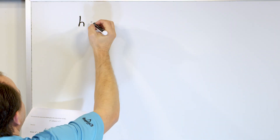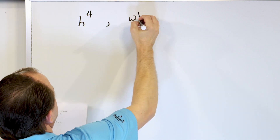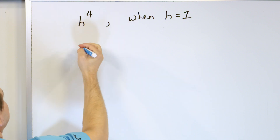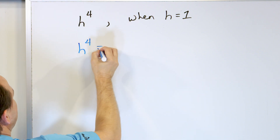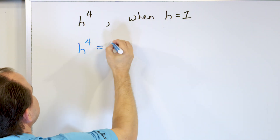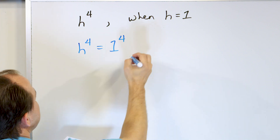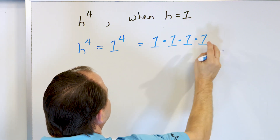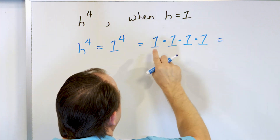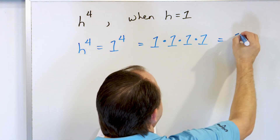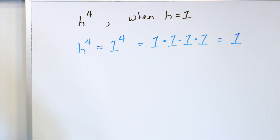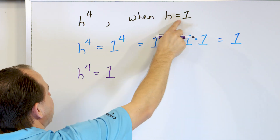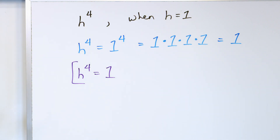What about the variable H to the fourth power, when the variable H is equal to the number 1? I know that H is to the fourth power, but I also know that H is equal to 1, so I'll substitute it in and say it's 1 to the fourth power. But 1 to the fourth power is just 1 times 1 times 1 times 1 — four of them because it's to the fourth power. And 1 times 1 times 1 times 1 never changes, so it's just equal to 1. So H to the fourth power is equal to 1, of course only when H is equal to 1.